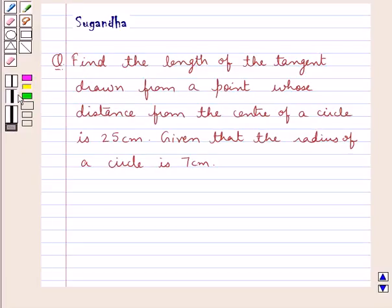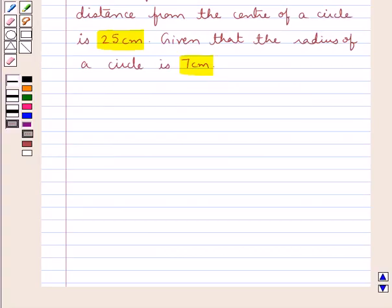Hello and welcome to the session. In this session we discuss the following question which says: Find the length of the tangent drawn from a point whose distance from the center of a circle is 25 centimeters, given that the radius of a circle is 7 centimeters.